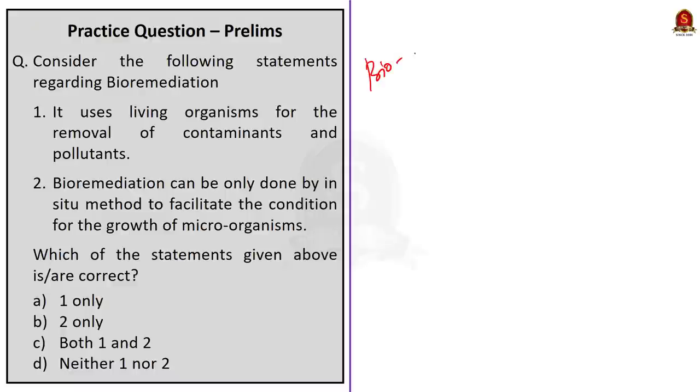In this discussion, we saw about bioremediation, different types of bioremediation and an Indian innovation in this field that is the oil zapper. With this, let us conclude this discussion and take up the next news article. See this article here. It is about the analysis of the ice cores of Greenland and Antarctica. According to the article, a research team has found an evidence of an extreme solar storm that occurred 9200 years ago.